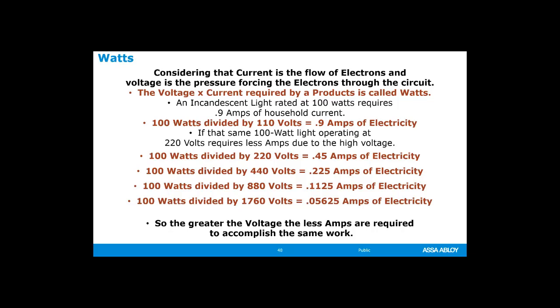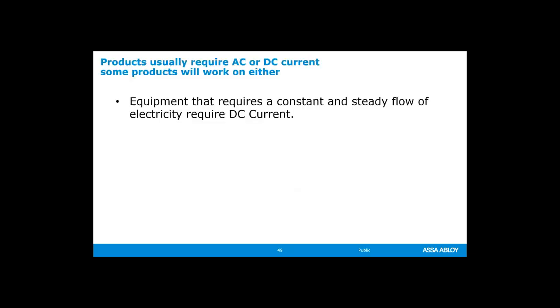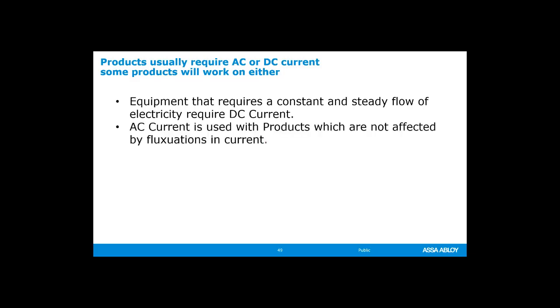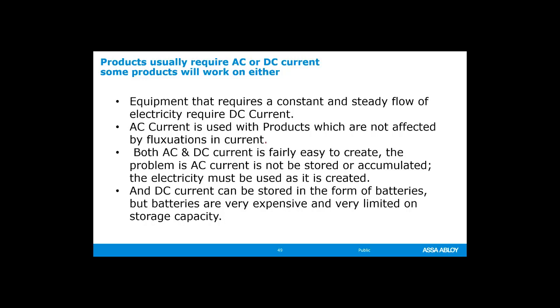The greater the voltage, the less amps required to accomplish the same amount of work. Equipment that uses a constant and steady flow of electrons requires DC current. AC current is used with products that are not affected by the fluctuation in the current. Both AC and DC current are fairly easy to create. The problem is AC current cannot be stored — the electricity must be used up as it's created. With DC current, it can be stored in the form of batteries, but batteries have very little storage capacity.